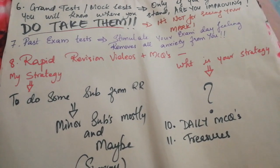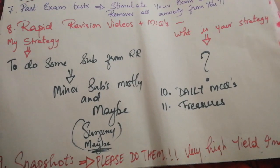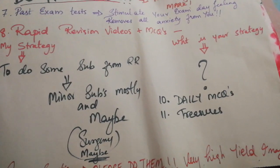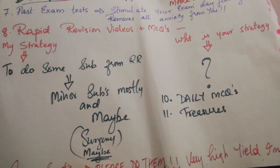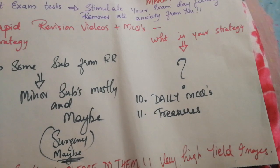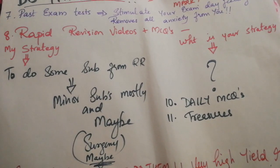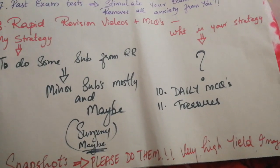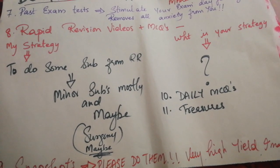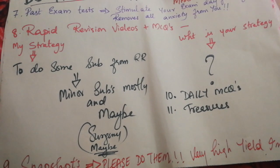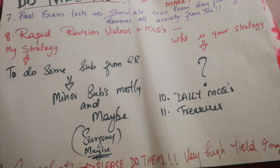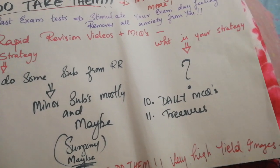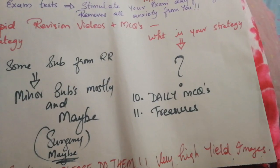Number eight is rapid revision videos plus MCQs. My strategy is to use rapid revision for minor subjects and possibly surgery. No matter what, you can always solve the MCQs from rapid revision as a bonus. Some people only did rapid revision and were able to pass and ace the exam, but I wouldn't say it's enough for all subjects — maybe just the minor subjects and one or two others. For subjects like pharmacology and pathology, I preferred the main videos and didn't want to compromise by using only rapid revision.